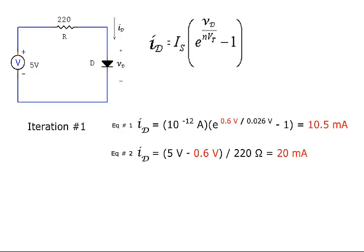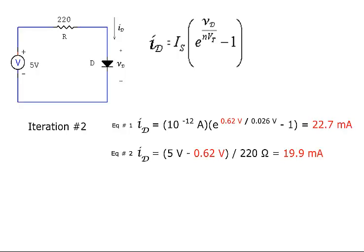Let's increase the diode's voltage in the first equation to raise the resulting current. Plugging 0.62 volts into the first equation gives us 22.7 milliamps. The same voltage in the second equation results in 19.9 milliamps. The two currents are getting closer, but now the first one is a little too high. Let's reduce our diode voltage to bring it down a little closer to the second current.